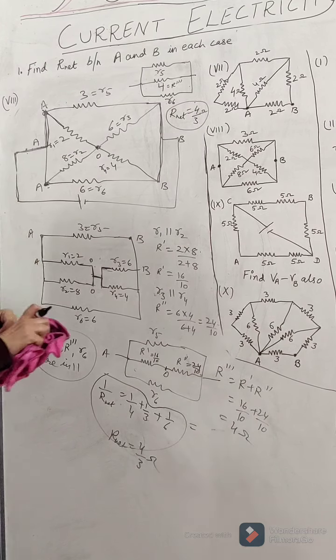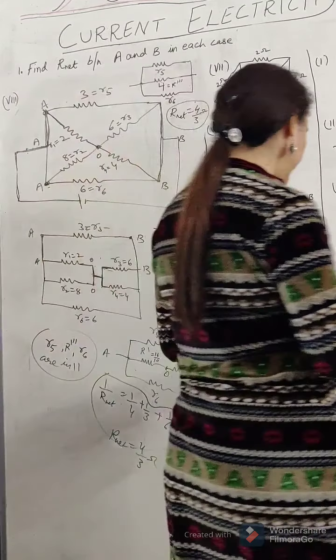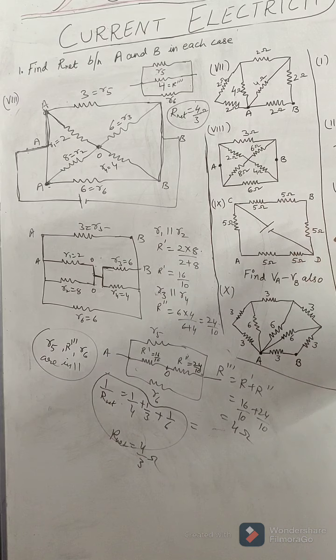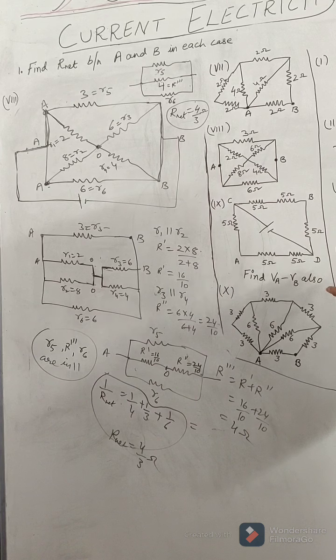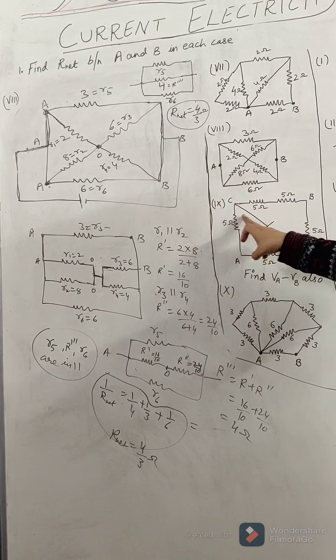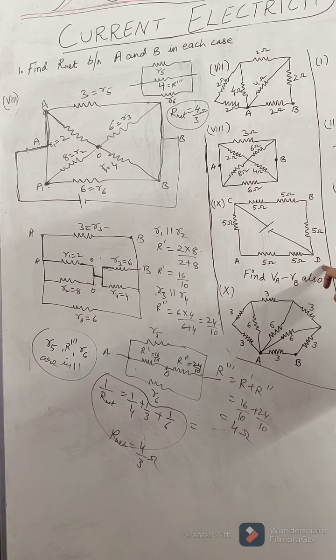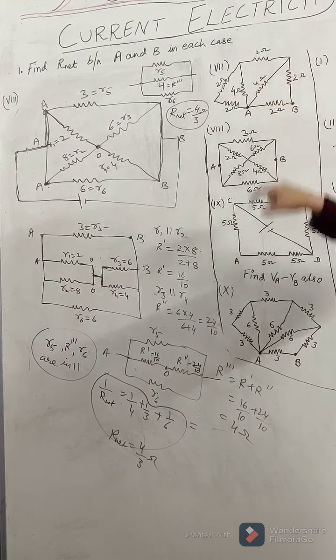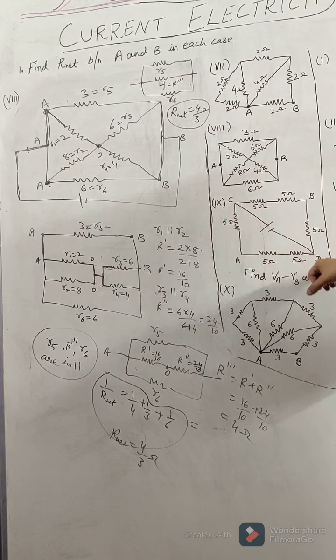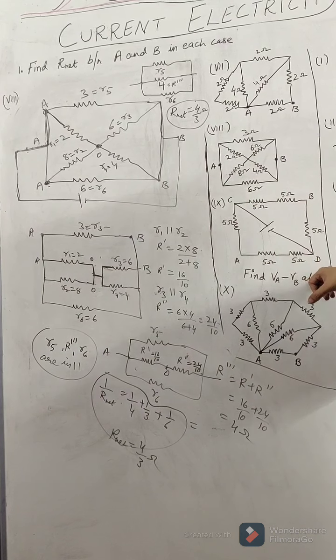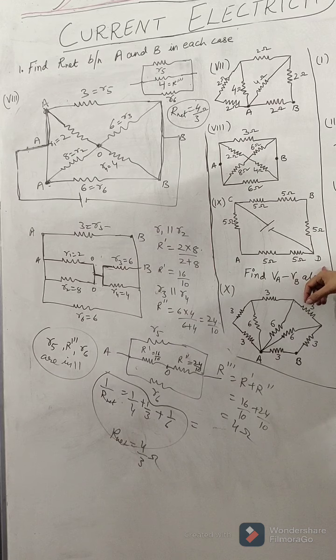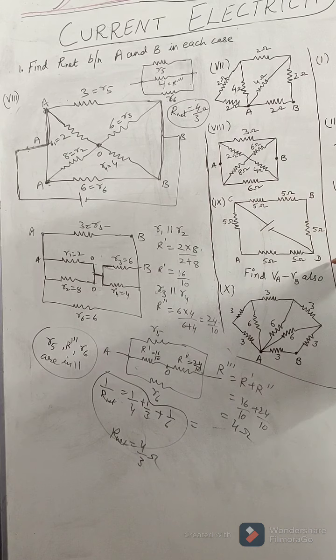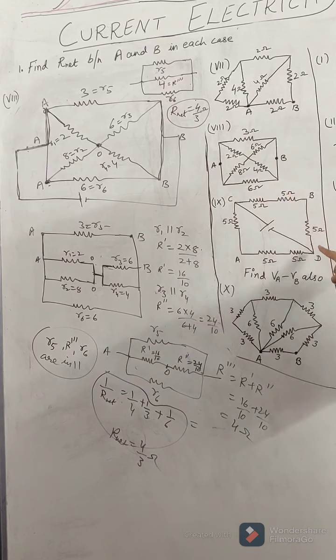Now we come to the 9th part. In the 9th question we have to find VA minus VB also. If you look at this question, to find the net resistance is very easy thing here. C and D have a battery. And we have to find here the net resistance. Although I have given the question find the net resistance between A and B in each case, but in this case since the battery has already been put in C and D, so obviously you have to find the net resistance between C and D, not between A and D. So from C the current goes along C to B to D and C to A to D, and both are identical branches.